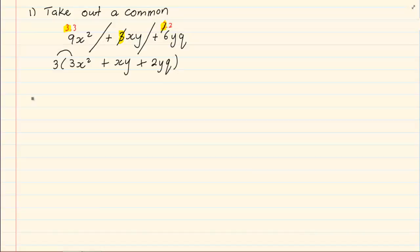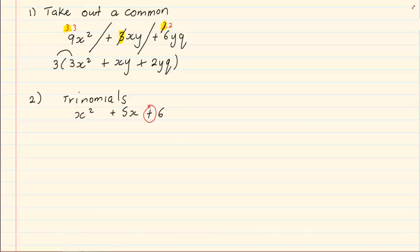That is the first rule of factorizing. The second rule of factorizing is trinomials. Trinomials usually means that there are three terms. If you are looking at trinomials, you need to remember that the first step is always the last sign. This sign can go any way — it can go plus and plus, minus and minus, plus and minus, minus and plus. To determine your final answer, we look at the sign of the second term.